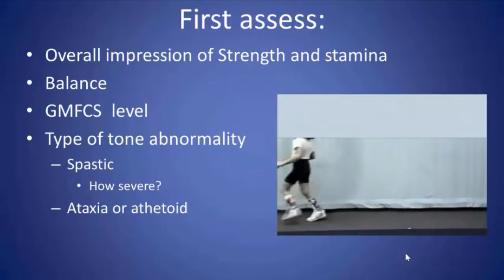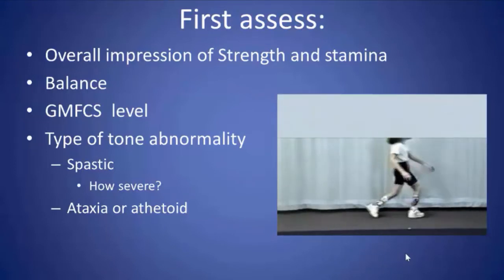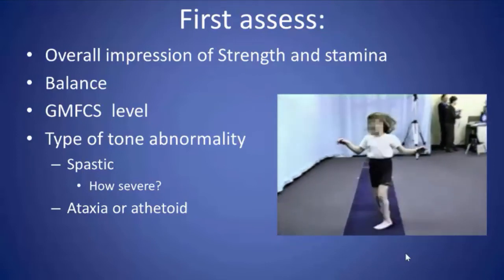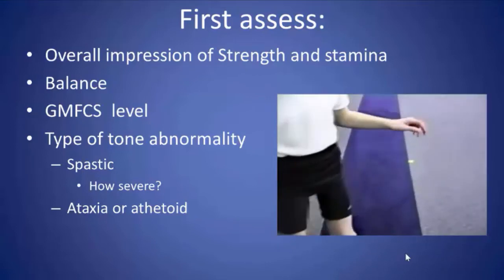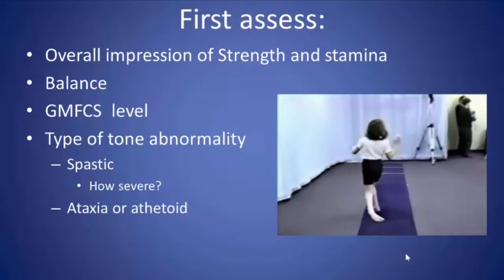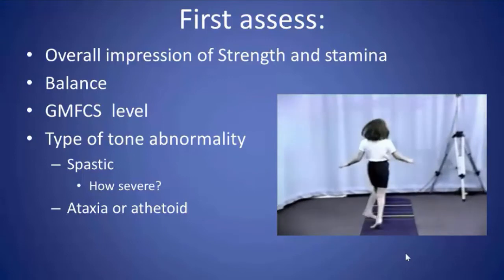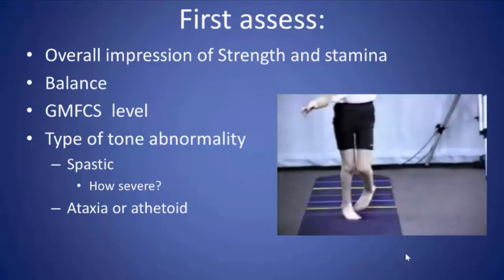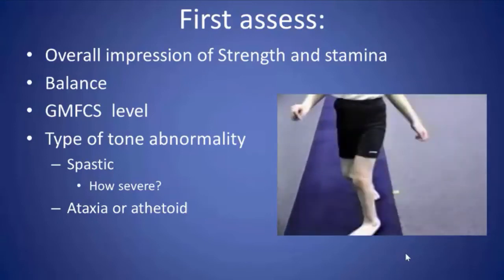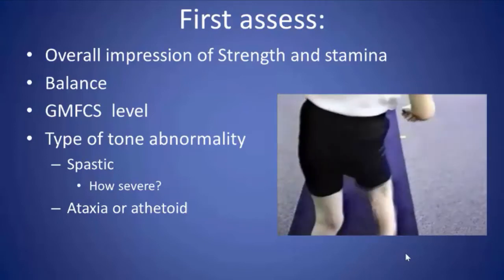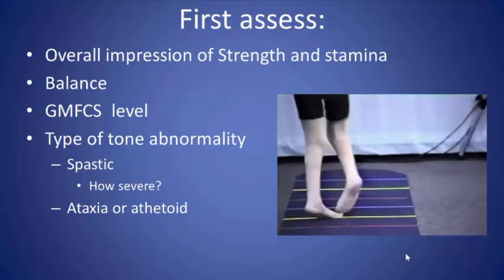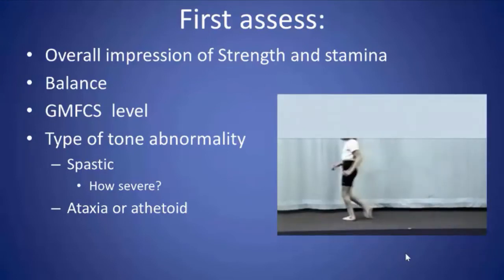Next, we want to categorize the severity of her CP — she would be a GMFCS level 2, which we'll go over in just a moment. We also want to determine what type of tone abnormality she has: is she purely spastic, or does she have any degree of ataxia, balance problems, or athetosis, which is uncontrolled movements?